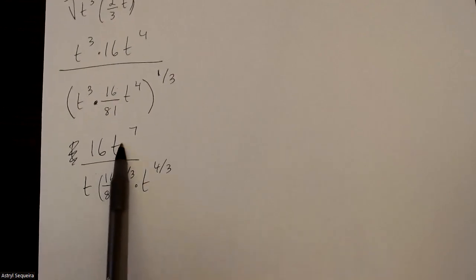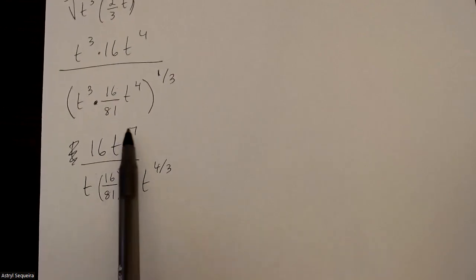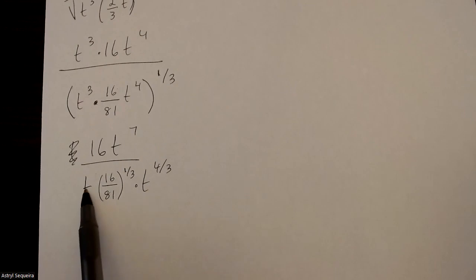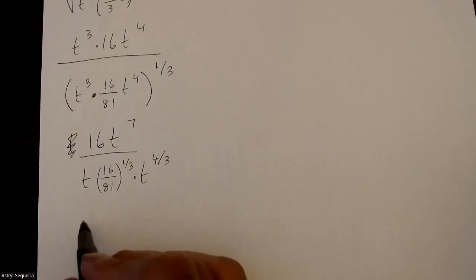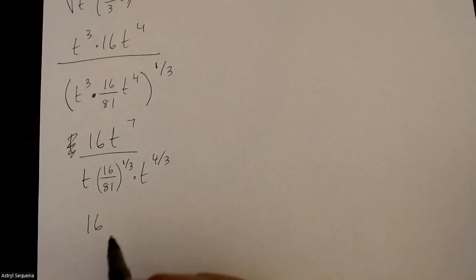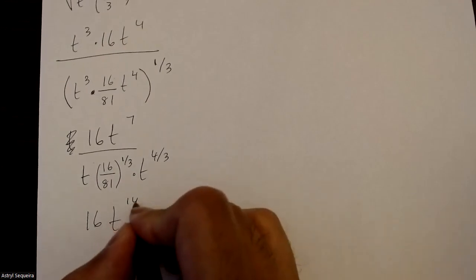And the next thing I can do is combine all my t terms by subtracting the exponents, so 7 minus 1 minus 4 over 3. That gives us 14 over 3.